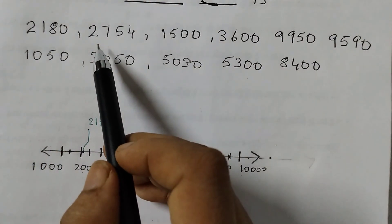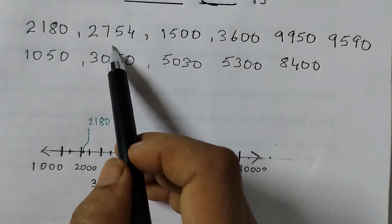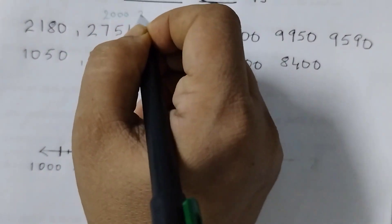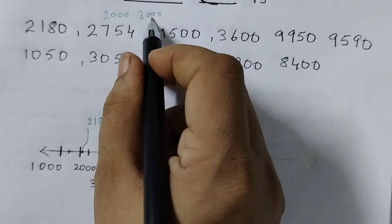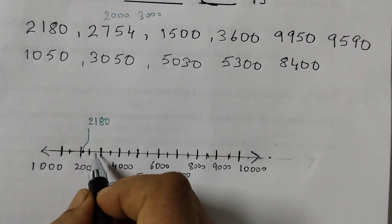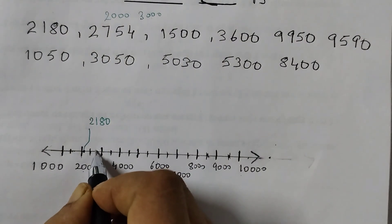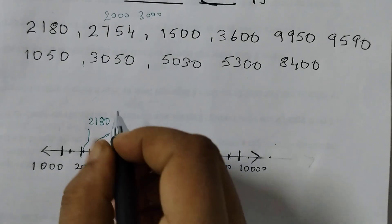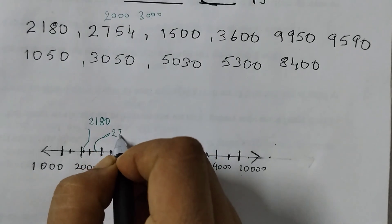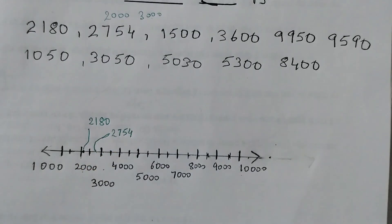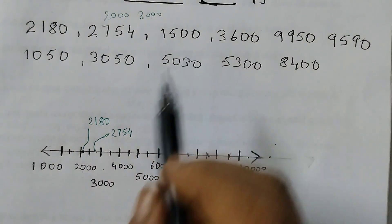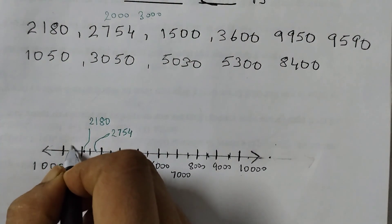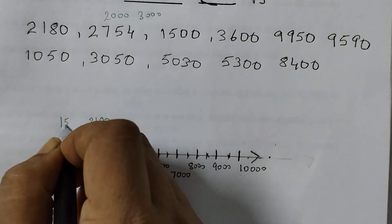The next number is two thousand seven hundred fifty-four. Again it lies between two thousand and three thousand, and it is closer to three thousand. So somewhere here we can locate two thousand seven hundred fifty-four. Then one thousand five hundred — that is exactly at the midpoint here, so that is one thousand five hundred.